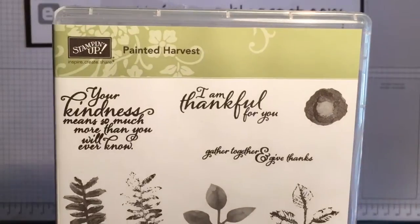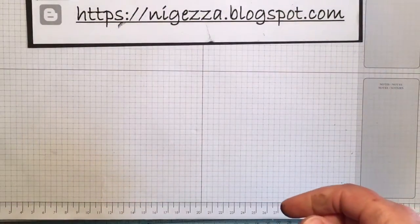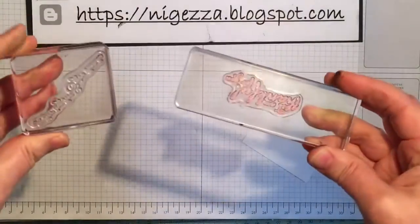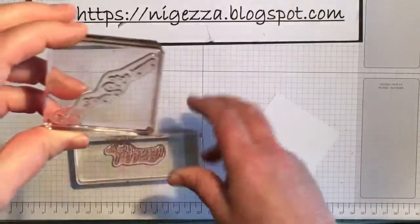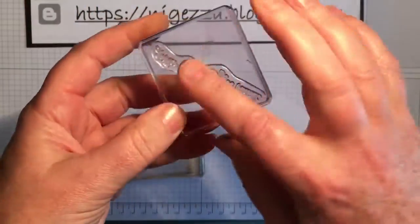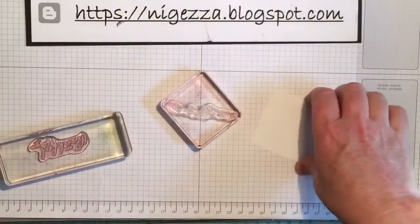So I was just going to show you a quick tip on how to do that. I've mounted the two stamps on my block and this one says gather together and give thanks, so we just want the thanks at the end.